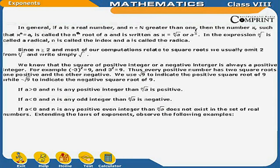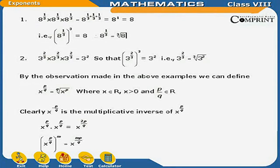Extending the law of exponents, observe the following examples. Example 1: 8 raised to the power 1 upon 3, multiplied three times, equals 8 raised to the power 1 upon 3 plus 1 upon 3 plus 1 upon 3, which equals 8 raised to the power 1, which equals 8. Therefore, 8 raised to the power 1 upon 3 whole cubed equals 8, so 8 raised to the power 1 upon 3 is equal to the cube root of 8. Example 2: 3 raised to the power 2 upon 3, multiplied three times, equals 3 squared. So 3 raised to the power 2 upon 3 is equal to the cube root of 3 squared.